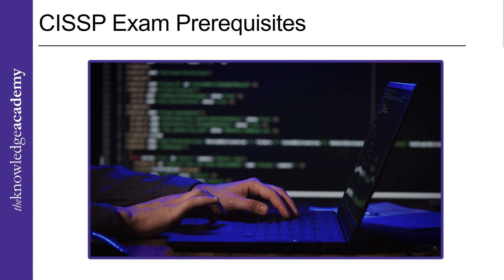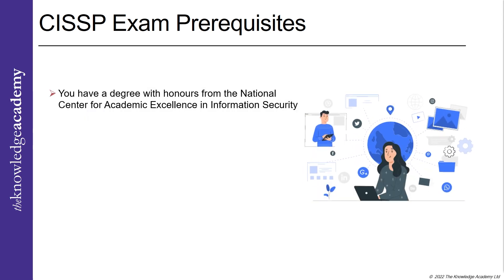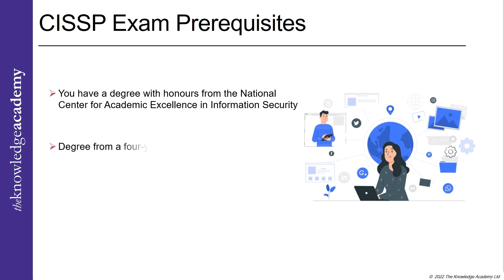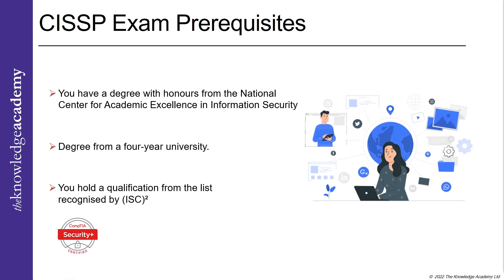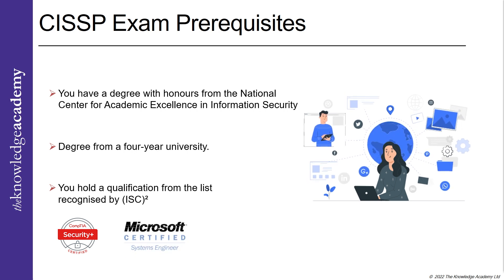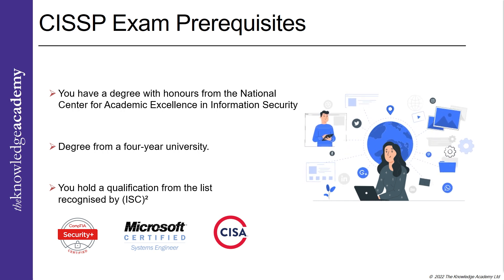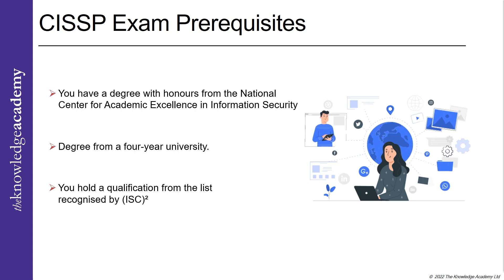The prerequisites you must meet to apply for the CISSP certification include: a degree with honors from the National Center for Academic Excellence in Information Security, a degree from a four-year university, or a qualification from ISC²'s recognized top list — such as CompTIA Security+, Microsoft Certified Systems Engineer (MCSE), or Certified Information Systems Auditor (CISA). Regardless of how many qualifying categories you fall under, you are eligible for only a one-year waiver from the five-year professional experience requirement.